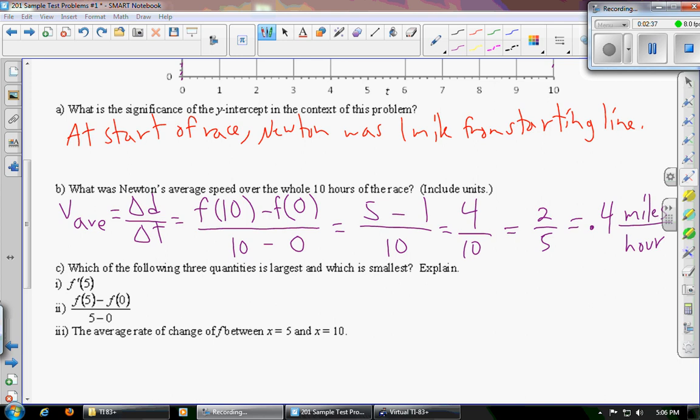Part C. Which of the following three quantities is largest and which is smallest? Explain: f prime of 5, f of 5 minus f of 0 divided by 5 minus 0, the average rate of change of f between x equals 5 and x equals 10. So what we're supposed to do is come up with some way to see each of those three quantities on the graph up above.